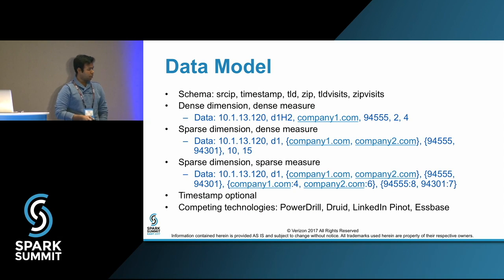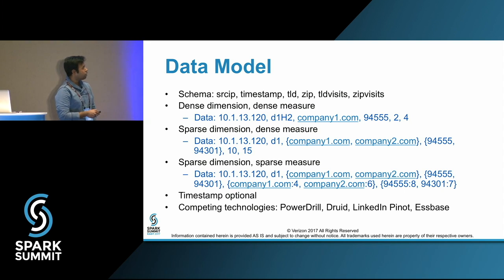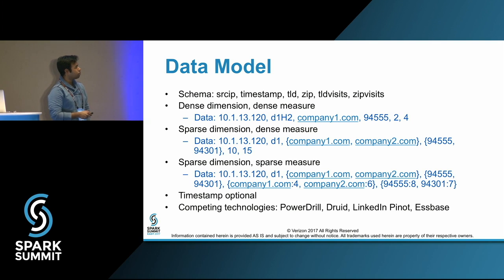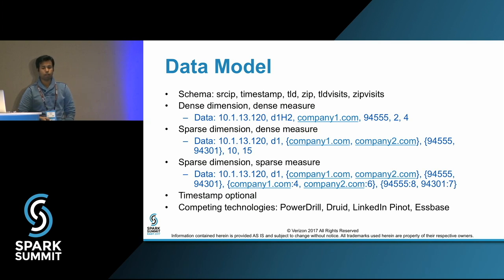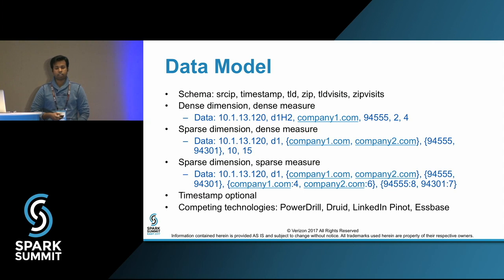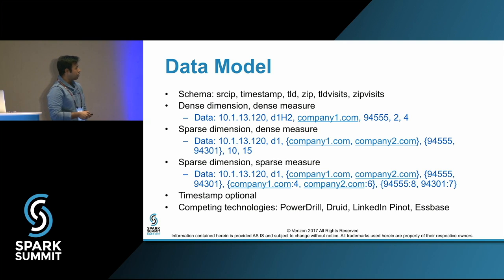Now let's go into the data model. The schema has a source IP, then a timestamp — timestamp is the key, so the data is time series. We have two dimensions: top-level domain, which includes things like macys.com and coles.com — this is a sparse dimension — and zip code, which is a dense dimension representing location. We also have measures associated with it: visits at the timestamp bucket where the TLD was visited, and how many times the location was visited in the time bucket.